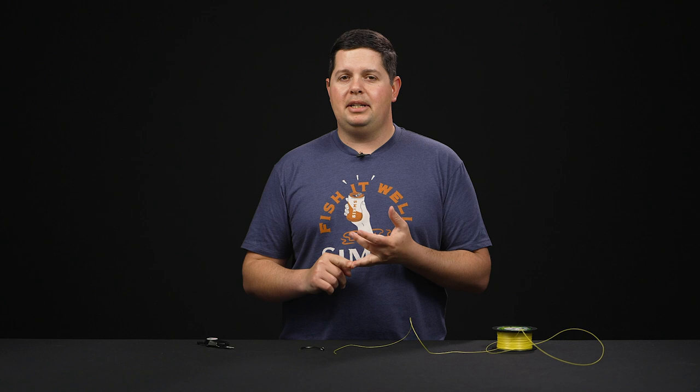The improved clinch knot has been around for decades. It's a great knot for beginning anglers, advanced anglers, no matter what your skill level is. It's good for all different types of line and it's good for all line sizes as well.